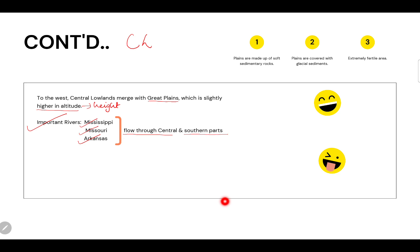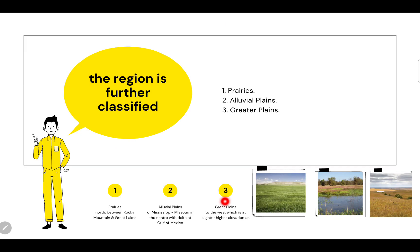The central lowlands have plains made of soft sedimentary rocks. The plains are covered with glacial sediments, and this area is extremely fertile, making it very good for agricultural activity where many different crops can be grown.